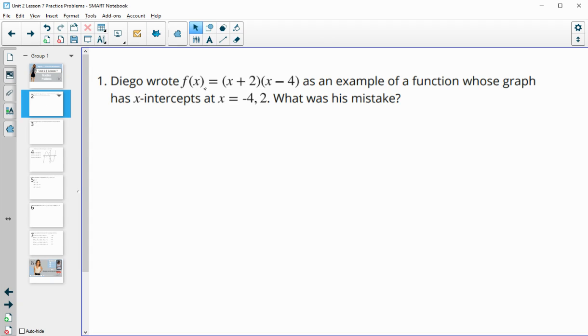Number one says that Diego wrote the function equal to x plus 2 times x minus 4 as an example of a function whose graph has x-intercepts at negative 4 and 2. What was his mistake?